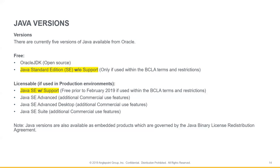Moving on to what's licensable — for production environments, Java SE requires a license if support is needed from Oracle. The following commercial programs also require a license: Java SE Advanced, Java SE Advanced Desktop, and Java SE Suite. Any Java embedded products also need to be licensed and are governed by a different contract called the Java Binary License Redistribution Agreement.